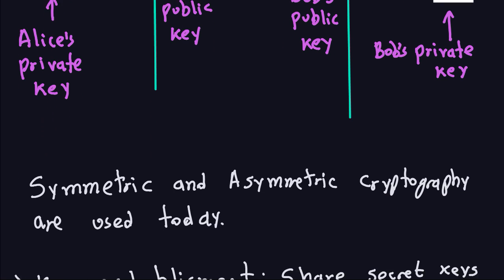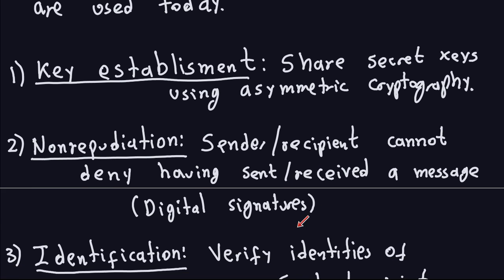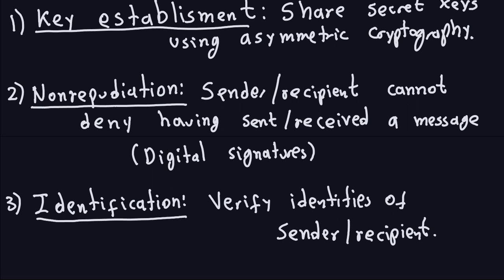Other important ideas with asymmetric cryptography include non-repudiation — the idea that the sender and receiver cannot deny having sent or received a message. Remember in the previous video we talked about the bank being able to fake or deny receiving a message. In this case we use asymmetric cryptography to verify that the sender and receiver actually sent or received the message, and this is realized using digital signatures, which we may discuss at the end of the class. Another idea is identification — verifying the identities of the sender and receiver — which is also a problem when communicating through an insecure channel, and it is also solved with asymmetric cryptography and digital signatures.